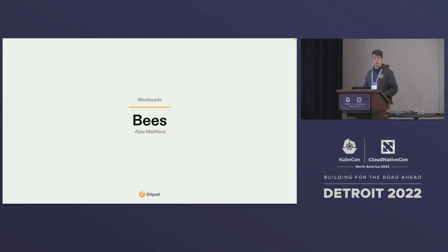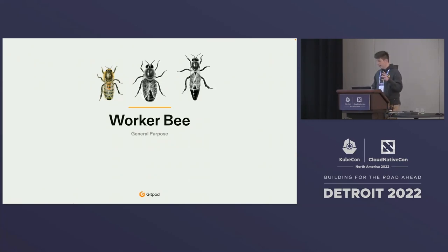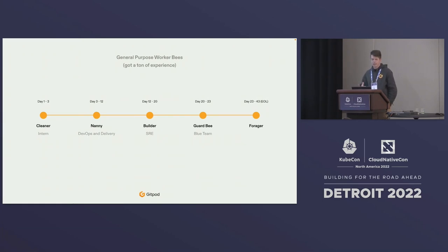In our analogy, bees are the workloads — the workloads and the people who work with things. There are three main types of bees. The worker bee is a strange combination of what in Kubernetes you would consider a pod and the people who operate those pods. They go through a series of steps along their career. They start out as an intern, cleaning up what others didn't want to — that's the first three days of a bee's life.